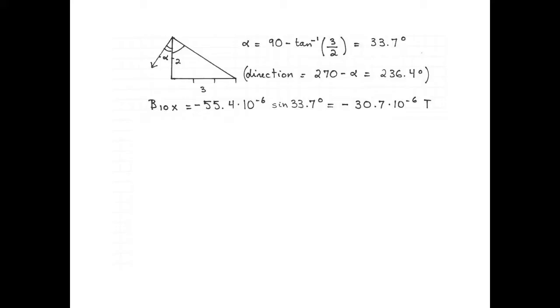I used sine because the angle alpha is opposite to the x component of the magnetic field. The y component is adjacent to the angle alpha, so the y component is minus 55.4 times 10 to the negative 6 cos of 33.7 degrees, which is minus 46.1 times 10 to the negative 6 tesla.